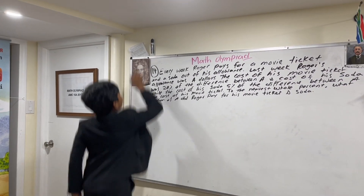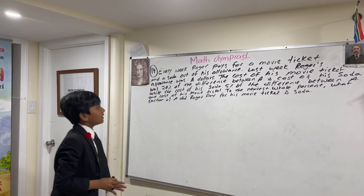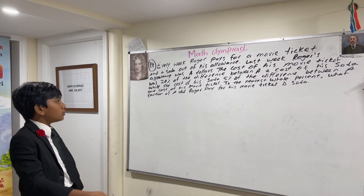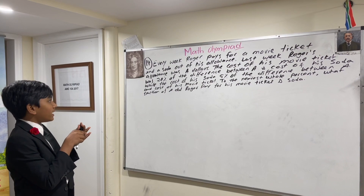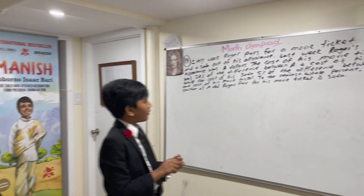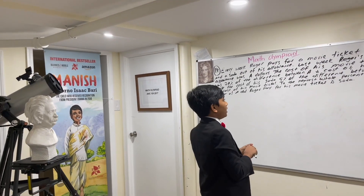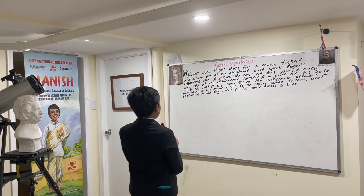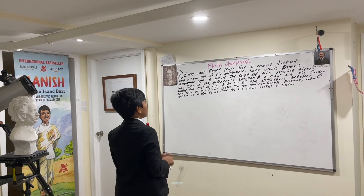Number 14. Every week, Roger pays for a movie ticket and a soda out of his allowance. Last week, Roger's allowance was $8.